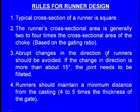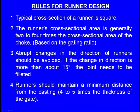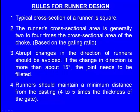Abrupt changes in the direction of runners should be avoided. If the change in direction is more than about 15 degrees, the joint needs to be filleted rather than having a sharp corner. Runners should maintain a minimum distance from the casting of 4 to 5 times the thickness of the gate or ingate — the runner should not be too close to the casting.